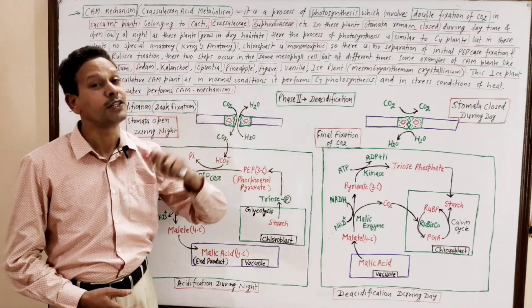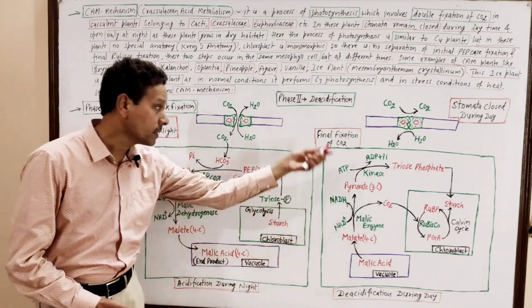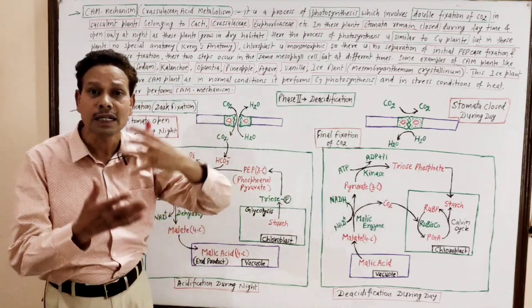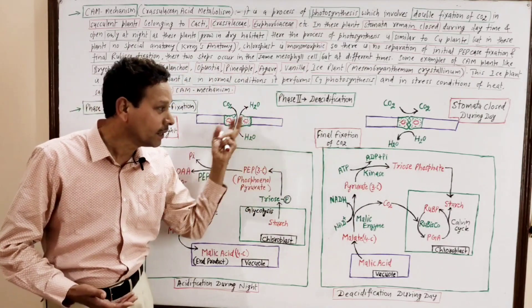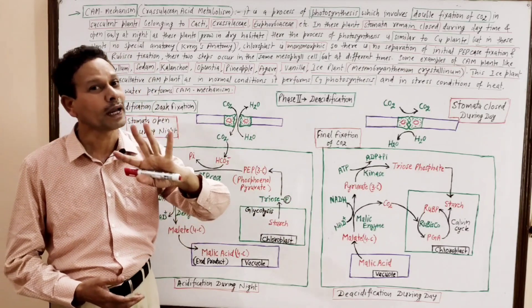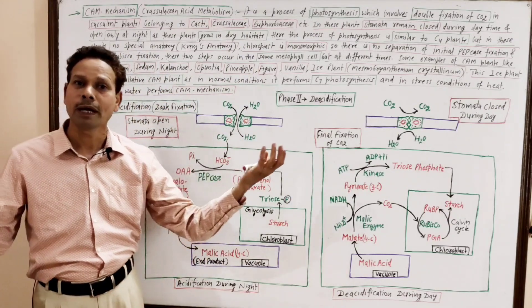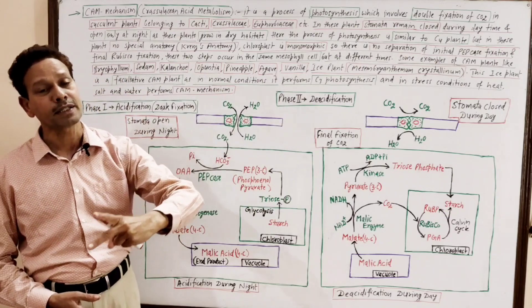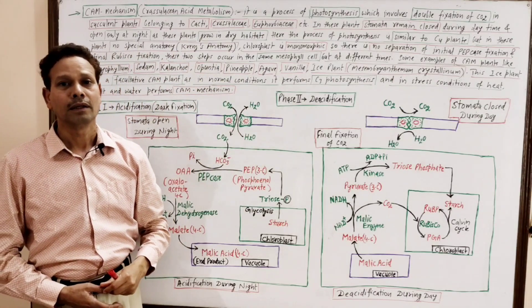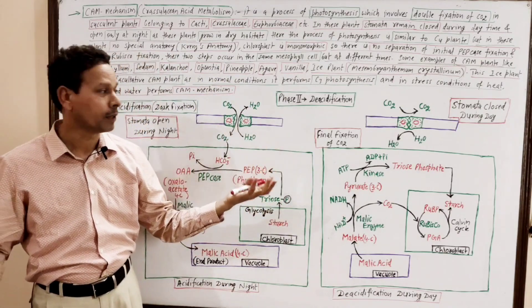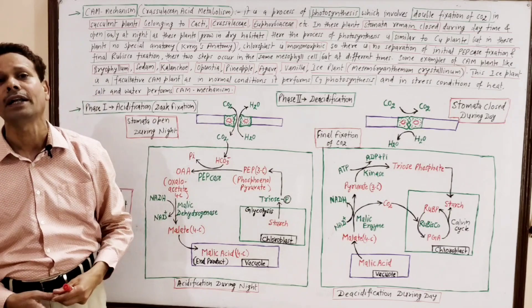But CAM is different from C4 because the chloroplast is monomorphic — only one type of chloroplast. The entire double fixation takes place in the same mesophyll cell. In these CAM plants, there is no Kranz anatomy. But in C4 plants, Kranz anatomy is present with two different types of chloroplasts in different cells — mesophyll cells and bundle-sheath cells. So double fixation in CAM occurs in the same mesophyll cell but at different times.